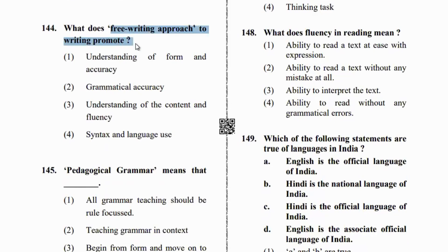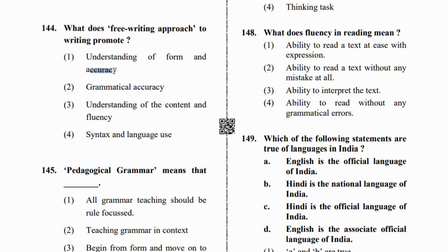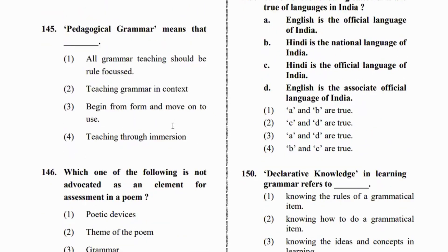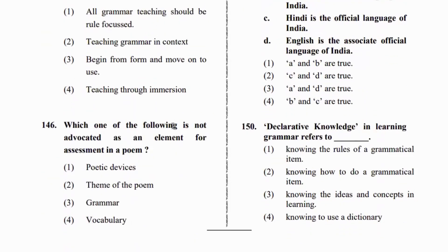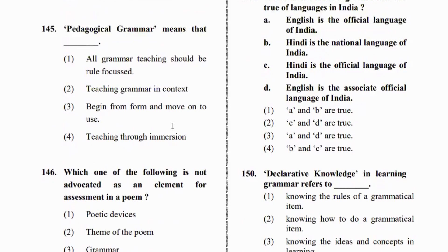Next question: what does the free writing approach to writing promote? In free writing, the child writes freely — not focused on accuracy or grammatical accuracy. For example, the child tells you about their whole day. Free writing promotes fluency, not grammatical accuracy.